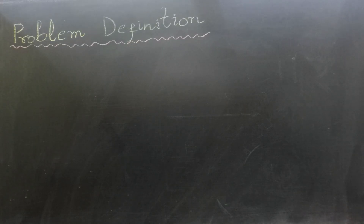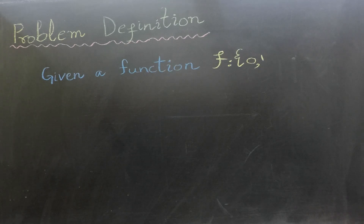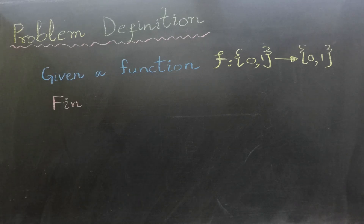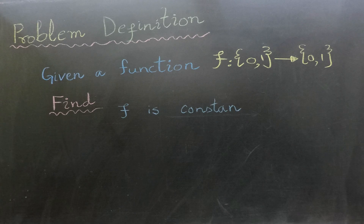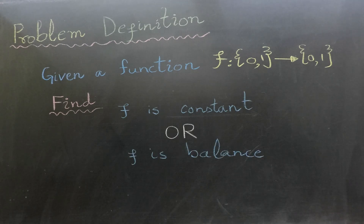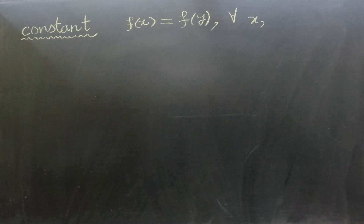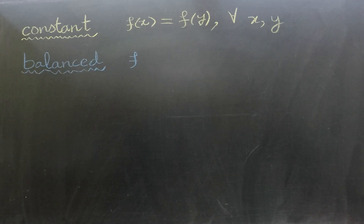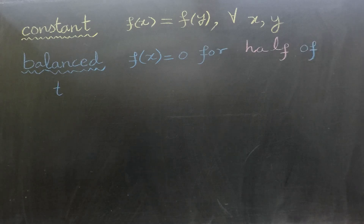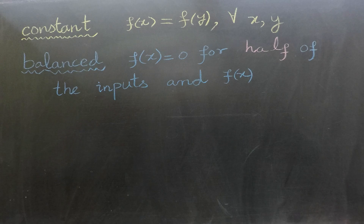Let's start with the problem definition. Given a function f that takes a single bit as input and yields a single bit output, our goal is to determine whether the function f is constant or balanced. A function is called constant if it produces the same output regardless of the input it receives. In contrast, a function is considered balanced if it yields zero for half of the possible inputs and one for the other half.